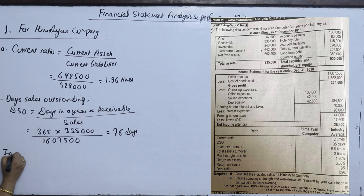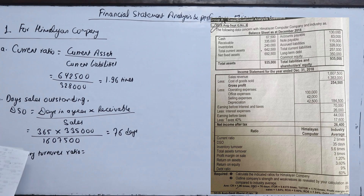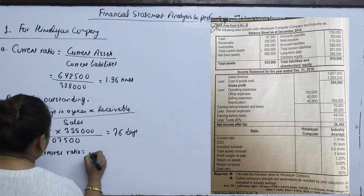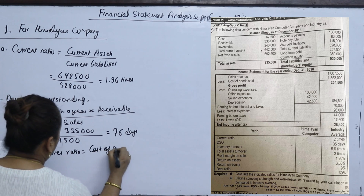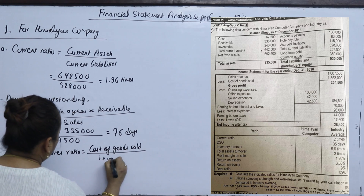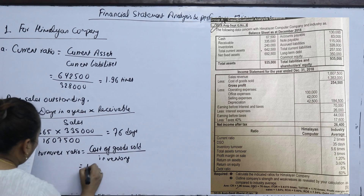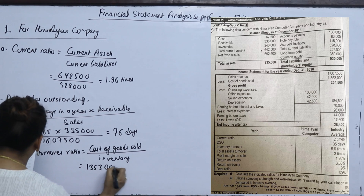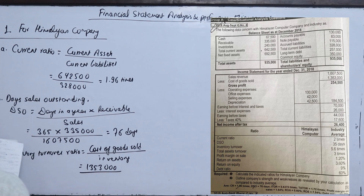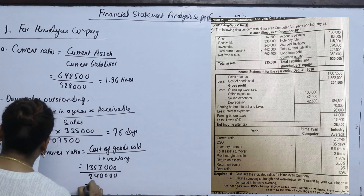The third number is the inventory turnover ratio. The inventory turnover ratio formula uses cost of goods sold divided by inventory. Cost of goods sold is 135,000 divided by inventory.